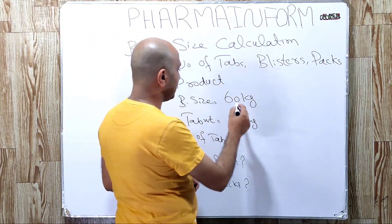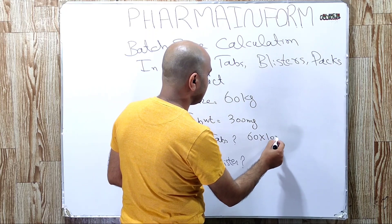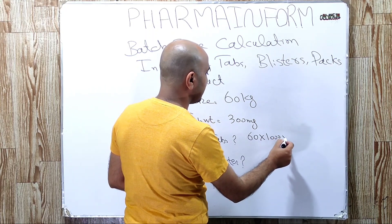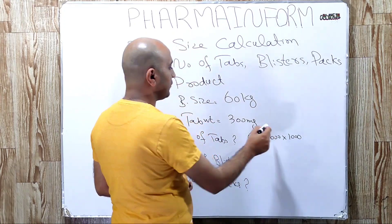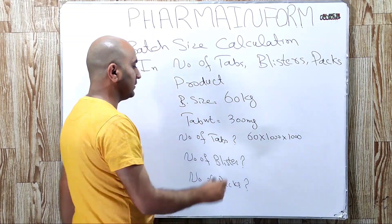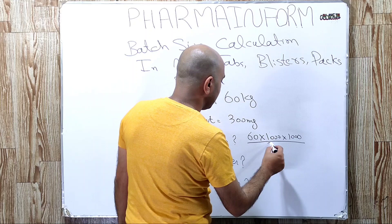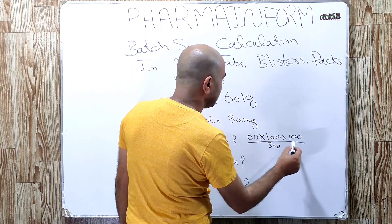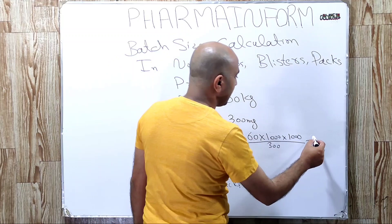For this, we will simply take 60 kilograms and multiply by 1000 and again by 1000. The first 1000 converts it to grams and the second 1000 converts it to milligrams. When we divide by 300 using a calculator, the answer...